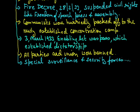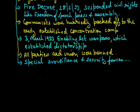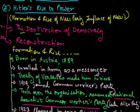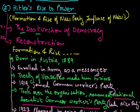Hitler introduced special surveillance and security forces to control Germany — similar to how India has scouts, guides, NCC, and paramilitary forces. Similarly, he introduced many forces in Germany. These included the Gestapo, which is a secret state police; the SS, which is a protection squad; the criminal police; and the security service SD. These were all established by Hitler in Germany. This is how the destruction of democracy in Germany was completed.